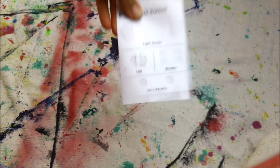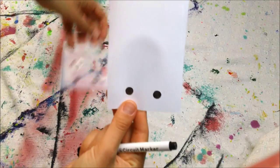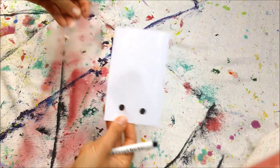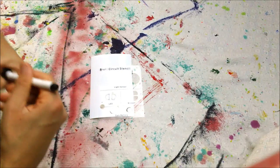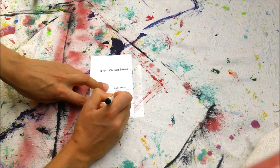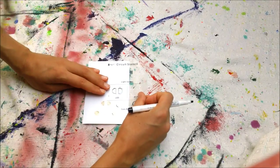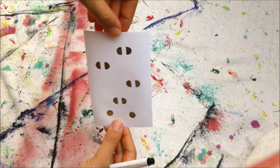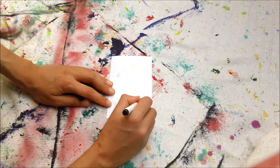So to begin I'm going to draw the pads for the battery and I'm using the stencil and the circuit marker to fill the two circles labeled coin battery. Then I'm going to draw the pads for the LED tag using the stencil. I'm drawing the circuit vertically on the paper because it will fit the card perfectly.